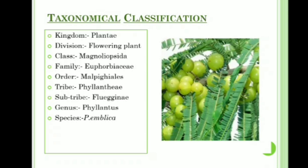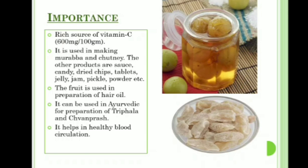Importance: Amla is a rich source of vitamin C, that is 600 milligrams per 100 grams. It is also used in making murabba and chutneys. Other products include sauce, candy, dried chips, tablets, jelly, jam, pickle, and powder. The fruit is also used in preparation of hair oil, which is very good for hair. It can also be used in Ayurvedic preparations of Triphala and Chyawanprash. It also helps in healthy blood circulation.